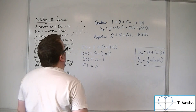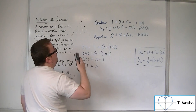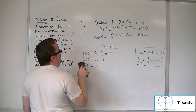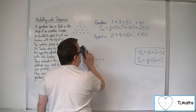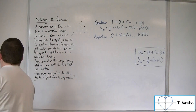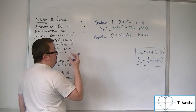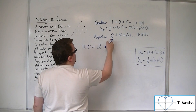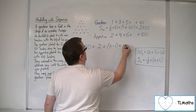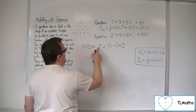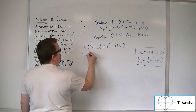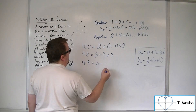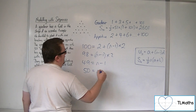We're going to use a similar technique. We would probably expect n to be 50 for the apprentice. To verify: 100 = 2 + (n−1) × 2. Take 2 from both sides, which gives 98. Then divide both sides by 2, giving 49 = n−1, so n is 50, as we thought.